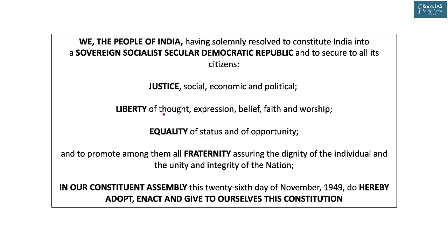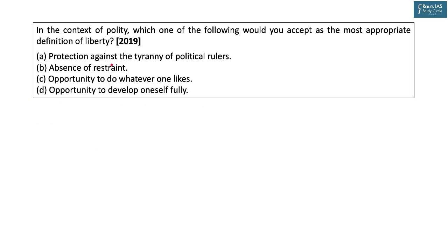The Preamble mentions liberty of thought, expression, belief, faith, and worship, alongside justice, equality, and fraternity. A 2019 prelims question asked for the most appropriate definition of liberty, with confusion between option B (absence of restraint) and option D (opportunity to develop oneself fully). Absence of restraint is a negative, older concept of liberty; the positive concept gives opportunity for individuals to make choices and develop fully.